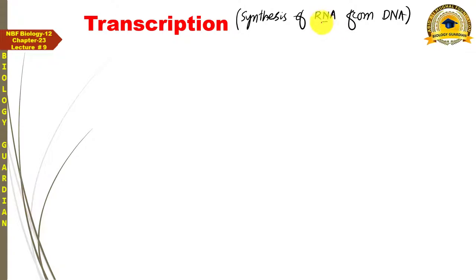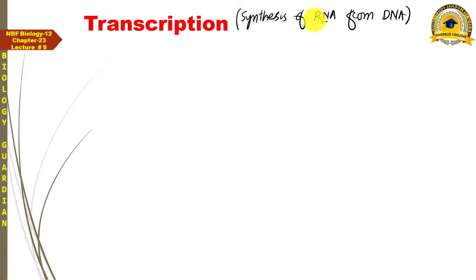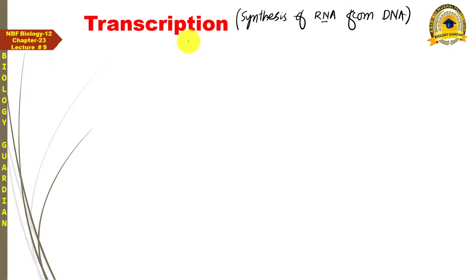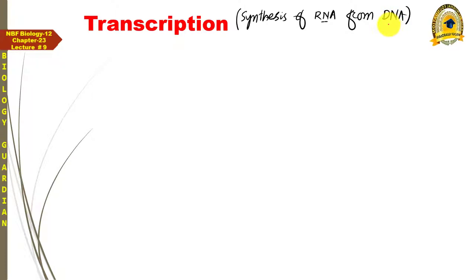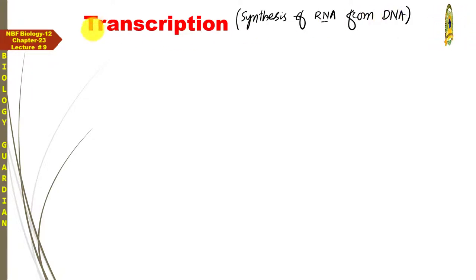RNA ایک polymer molecule ہے، تو کسی بھی polymer کی formation کو polymerization کہہ سکتے ہیں۔ Transcription بھی ایک polymerization process ہے، just like DNA replication - کیونکہ DNA replication میں DNA سے DNA بنتا ہے اور DNA بھی ایک polymer molecule ہے۔ اسی طرح transcription میں RNA کی formation ہو رہی ہے تو یہ بھی ایک polymerization process ہے۔